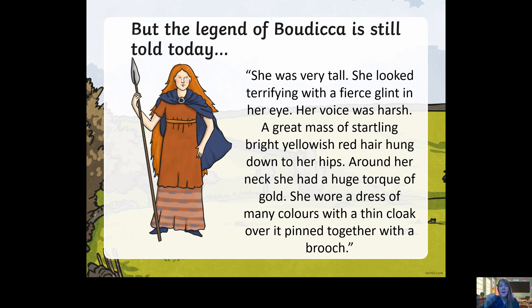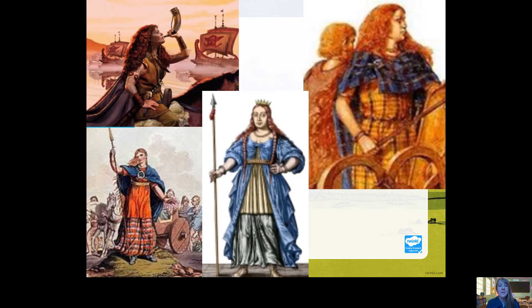We've been learning about Boudicca and we have a description of her. Remember our goal today — we're learning to write a description. On this slide you can pause and write down some ideas. These are all pictures — not photos, because almost 2,000 years ago there were no cameras — they're paintings and images of what people think she looked like. In all the pictures she's got that long, fiery red hair. In some she's holding a spear; she's a fighter.